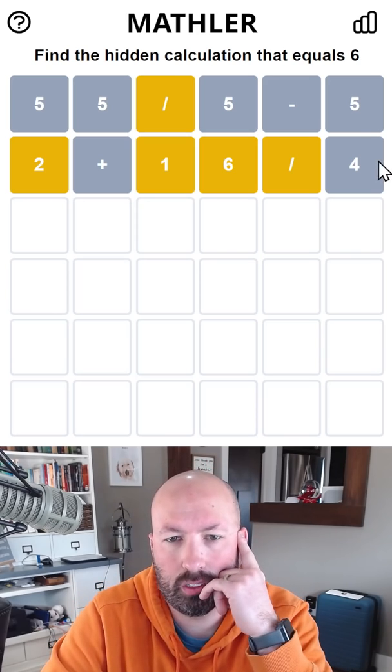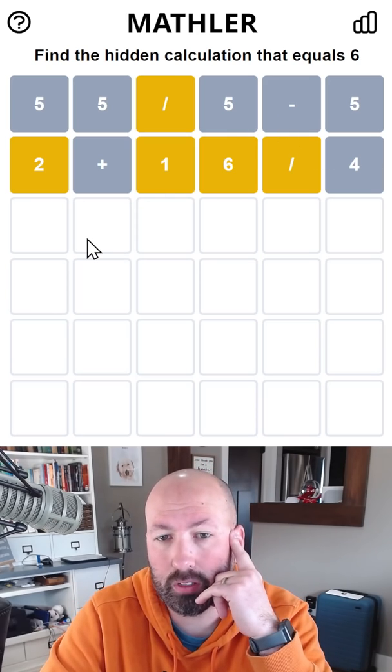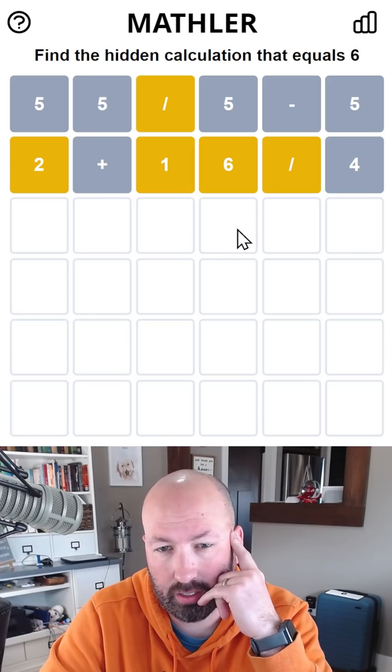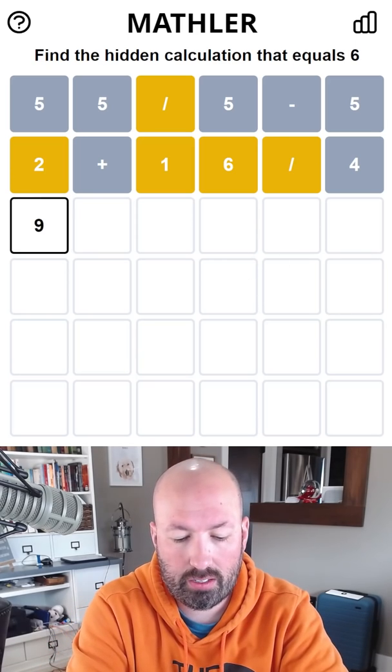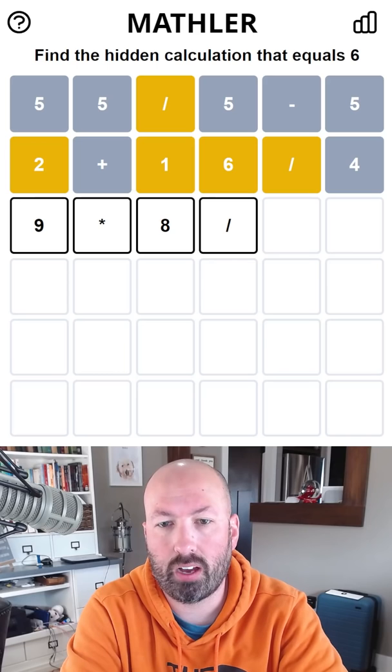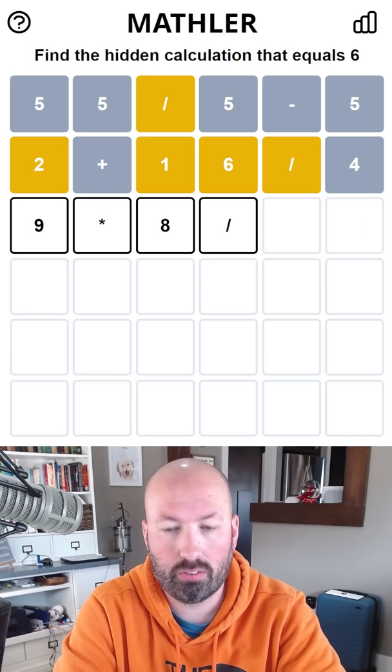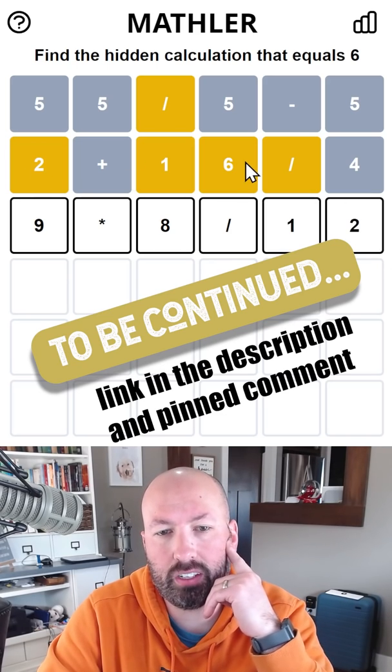Okay, so it's got to be multiplication and then division and we must be dividing by a two-digit number? What about 9 times 8 divided by 12? That would work, but we need to have a 6 in there somewhere.